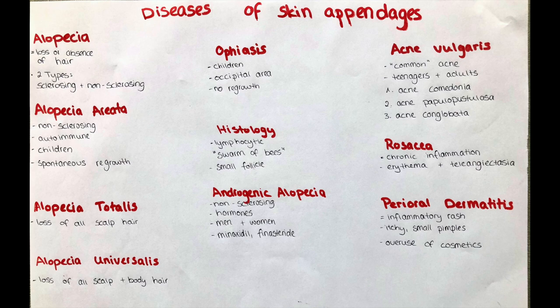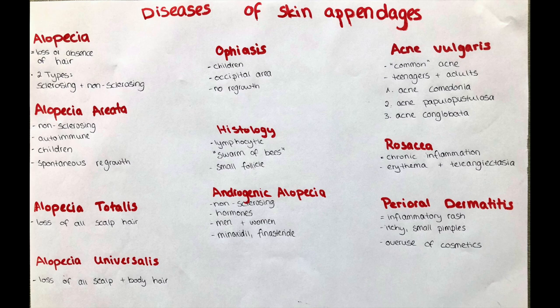Acne vulgaris is the form of acne that many teenagers have to deal with, but it can also affect adults. Often changes in hormone levels are the culprit for the development of pimples, blackheads, and similar lesions. Mostly the skin of the face is affected — particularly the forehead and chin — and in some rarer cases also the cleavage and back. Severe forms must be treated by a dermatologist. There are different peelings and steam treatments that help treat existing acne and prevent further formation with minimal scar formation. In mild cases, washing agents for the face can already be sufficient.